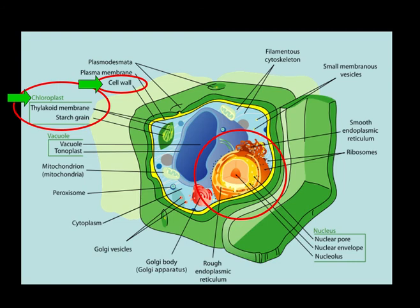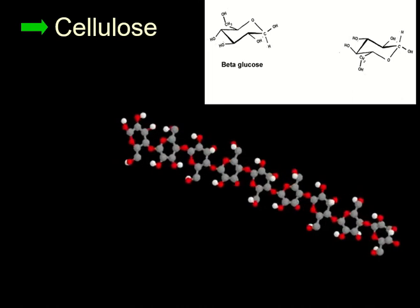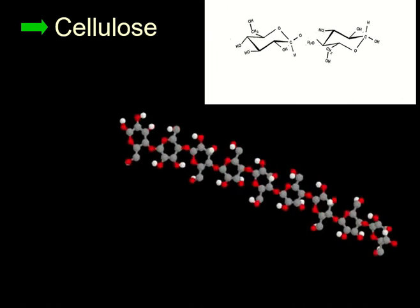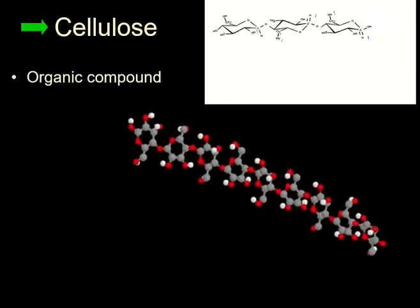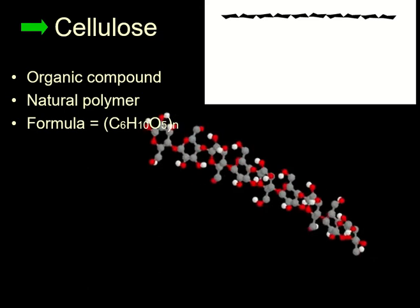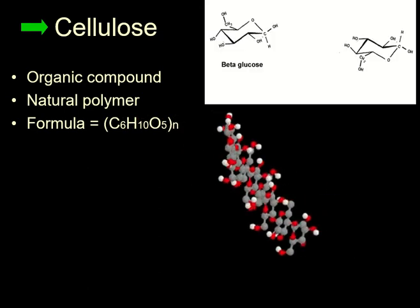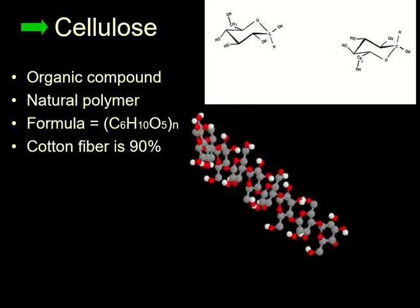Another important aspect of plants are the cell walls, and the cell walls are made of cellulose. Cellulose is basically what's left in the archaeological record of plants for the most part. It's an organic compound. It's a natural polymer. Its formula has carbon, hydrogen, and oxygen in it.